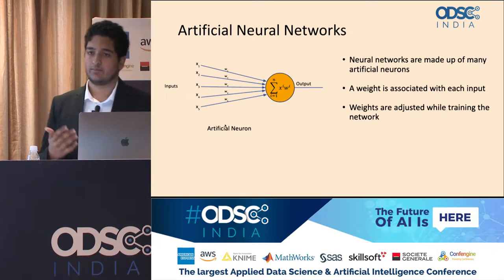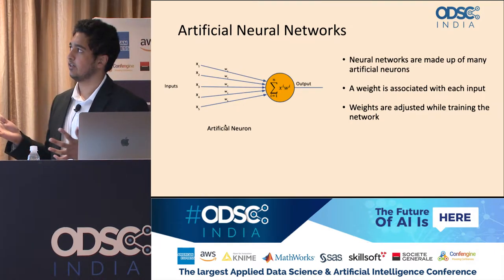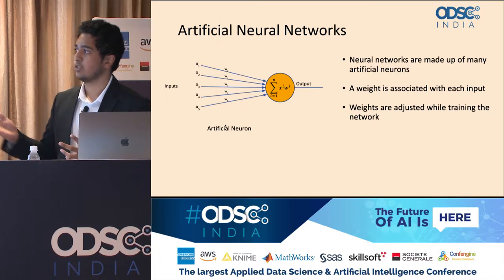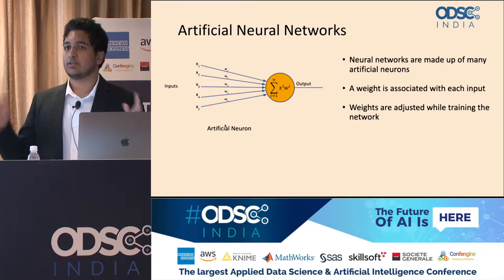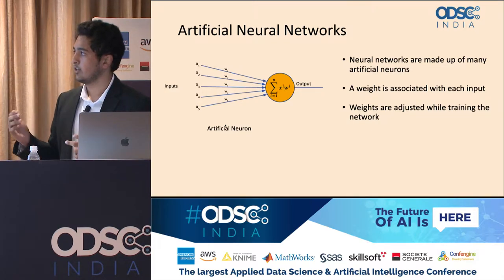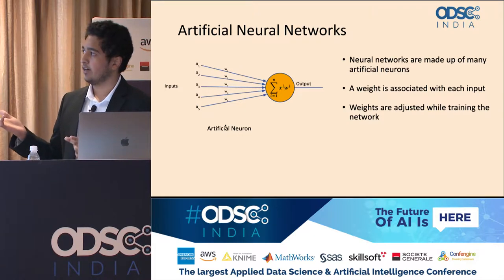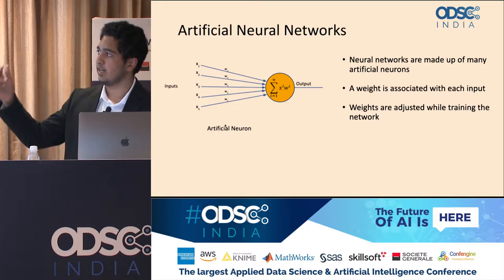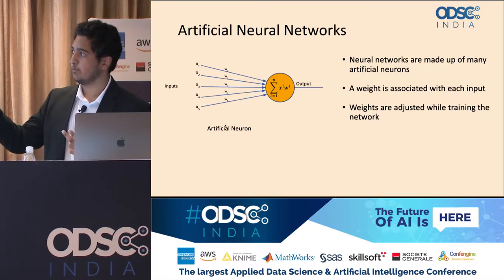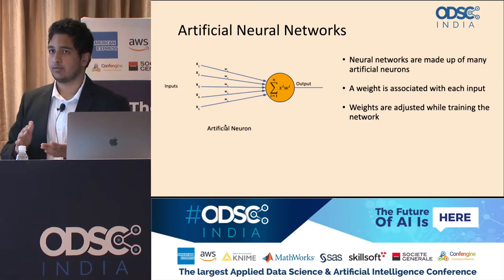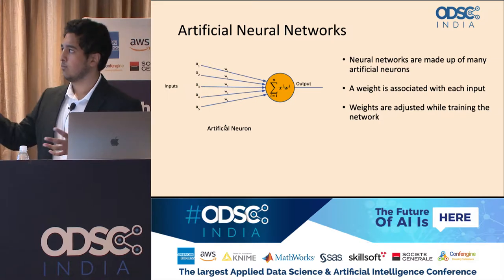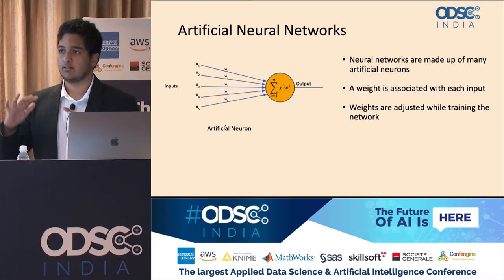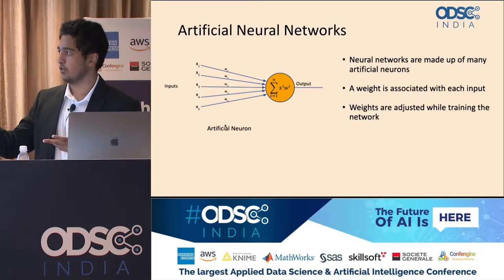Here is an example of what a singular neuron looks like in an artificial neural network. The full neural network will have many of these neurons. The idea behind a neural net is that it's modeled to be similar to a human brain. The neuron takes many different inputs, applies some weight to that input, combines all of those inputs together, and puts them through an activation function, then propagates among further neurons.